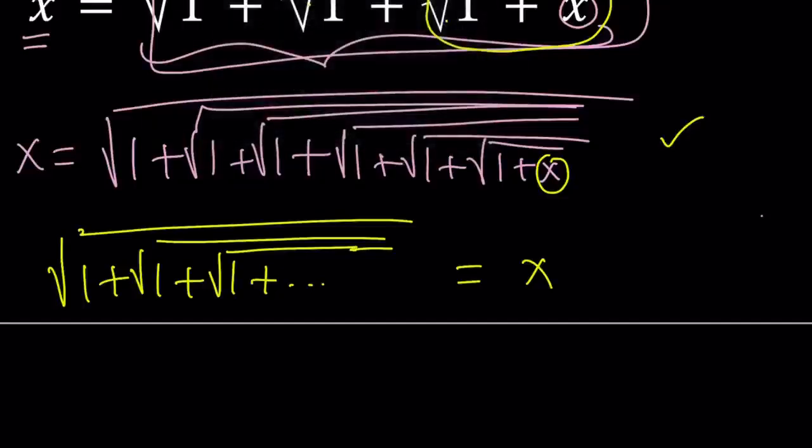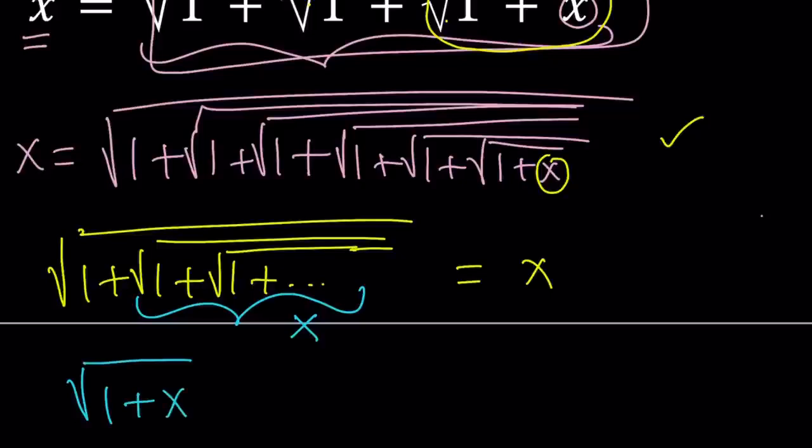So if you have an expression like the square root of 1 plus the square root of 1 plus the square root of 1, we set it equal to x, and then we realize that this whole thing is the same thing as the original. So we get something like the square root of 1 plus x equals x.